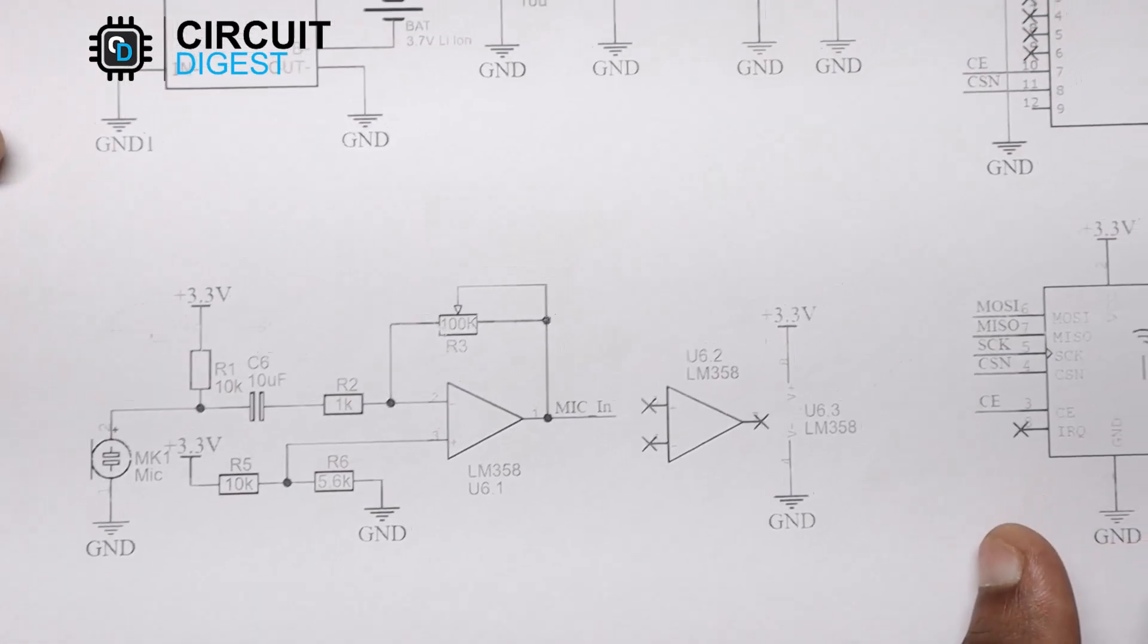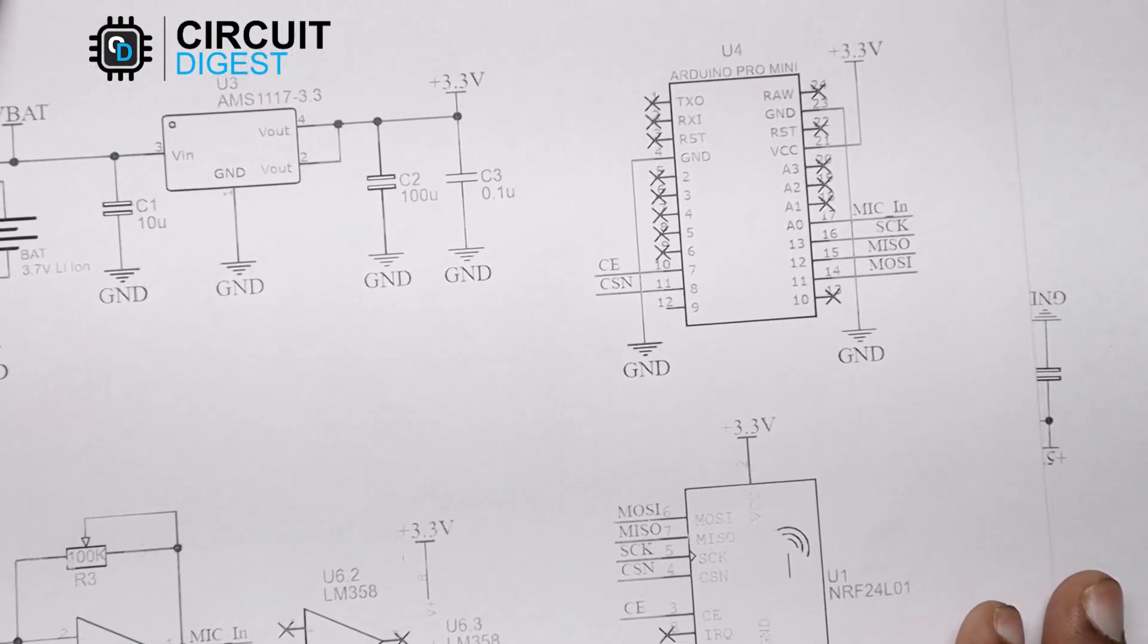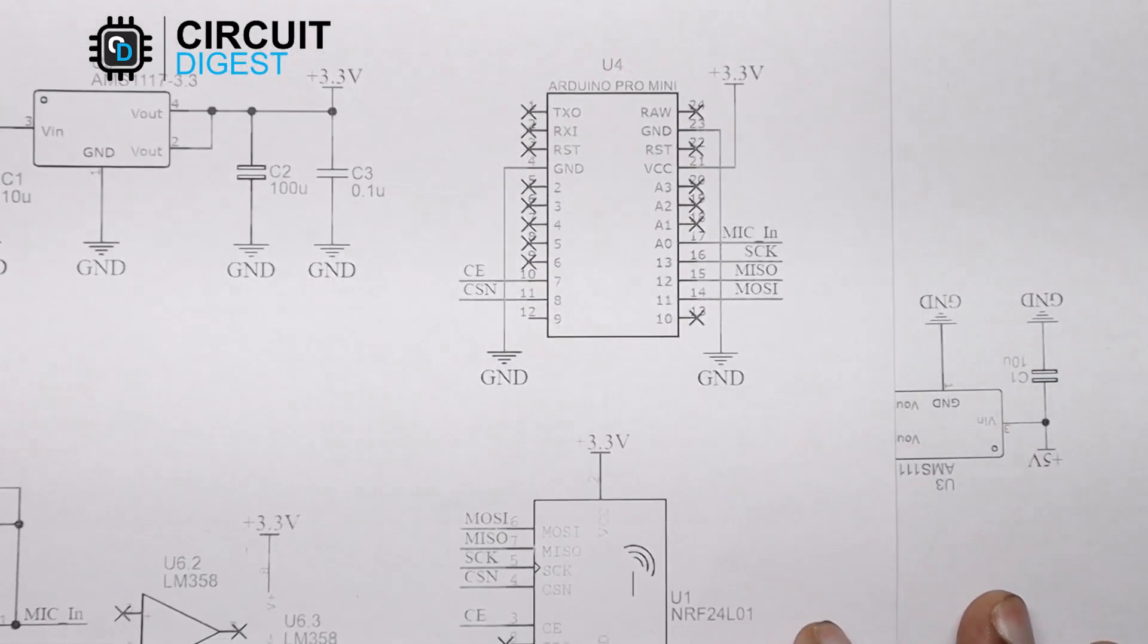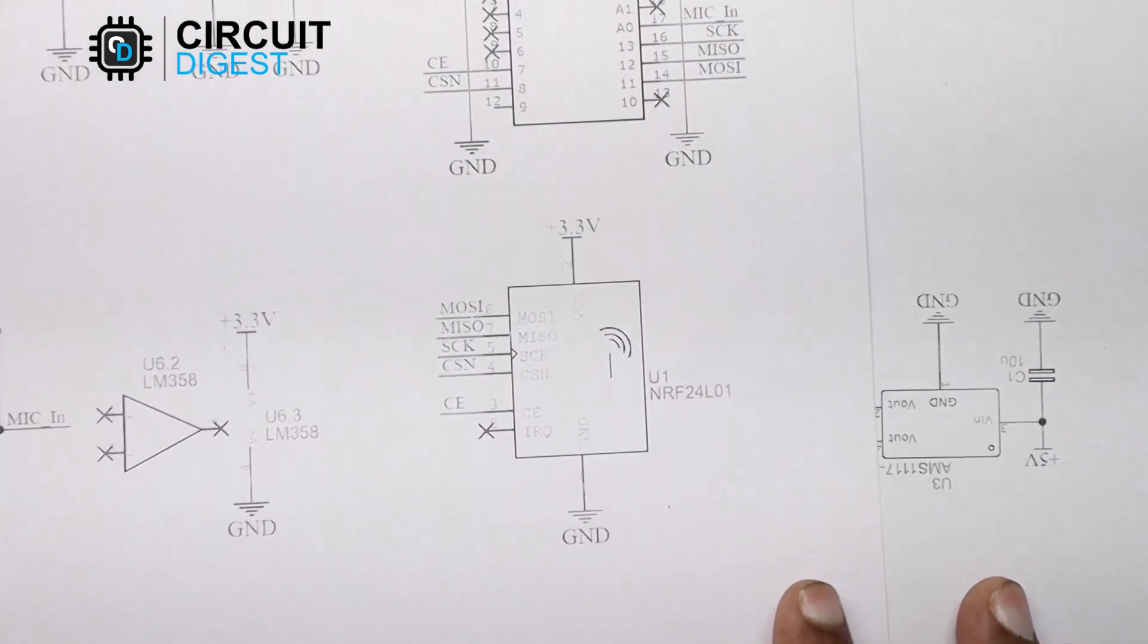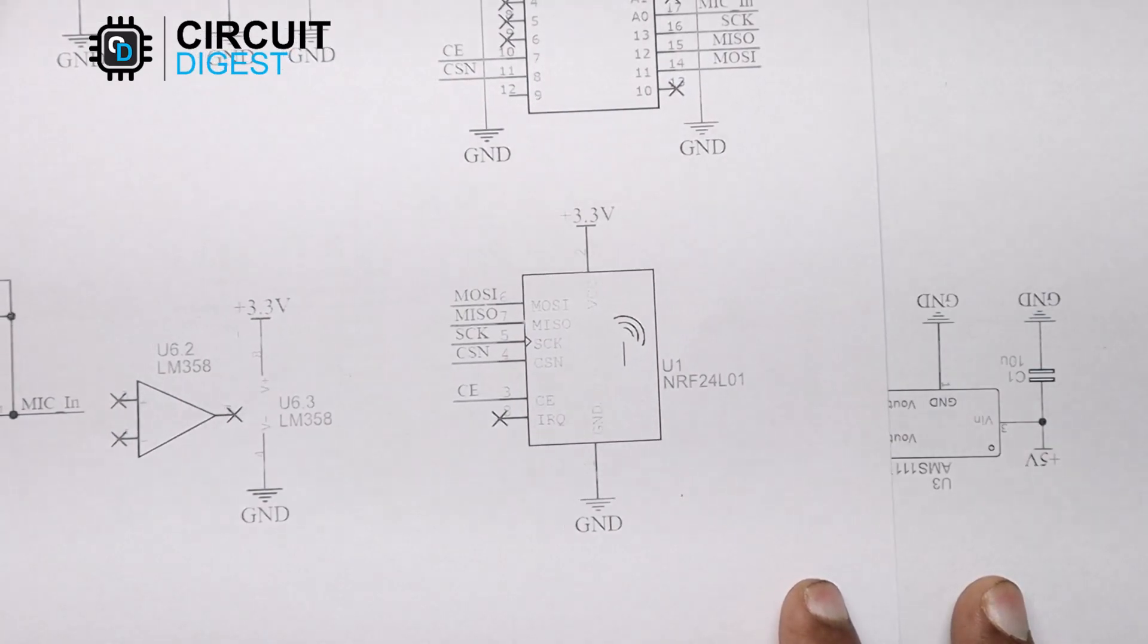The next section is the Arduino Pro Mini itself. The Arduino Pro Mini will process the signal from the microphone pre-amp and will transmit it using the NRF module at the last section. The NRF module is interfaced with the Arduino over standard SPI bus.